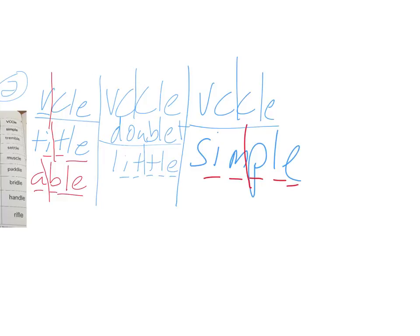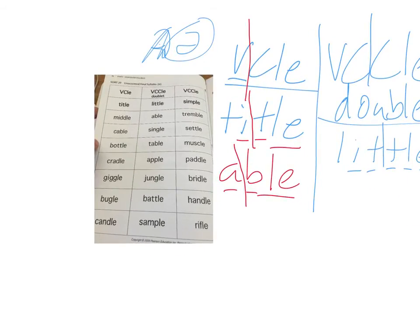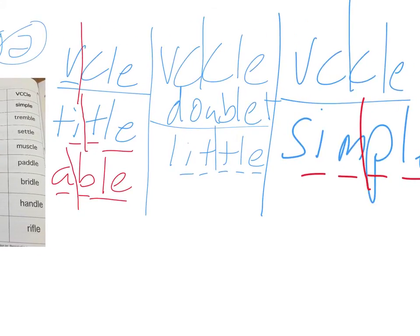And in that case, you'll also have that. I'll go ahead and show you a couple more words as we sort these out. So middle, middle, you have the double, you have a short vowel sound and the double consonants in the middle. So M-I-D-D-L-E. That goes in with your doublets.